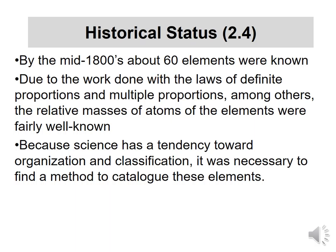Currently we have 118, so we're nearly double that now. Due to the various pieces of work done with the laws of definite proportions and multiple proportions, the relative masses of the atoms were fairly well known — that oxygen was eight times heavier than hydrogen, that nitrogen was seven times heavier than hydrogen. And since science has a tendency toward organization and classification, it was really necessary to find some way of organizing and understanding these 60 elements. An alphabetic listing isn't helpful in terms of understanding.